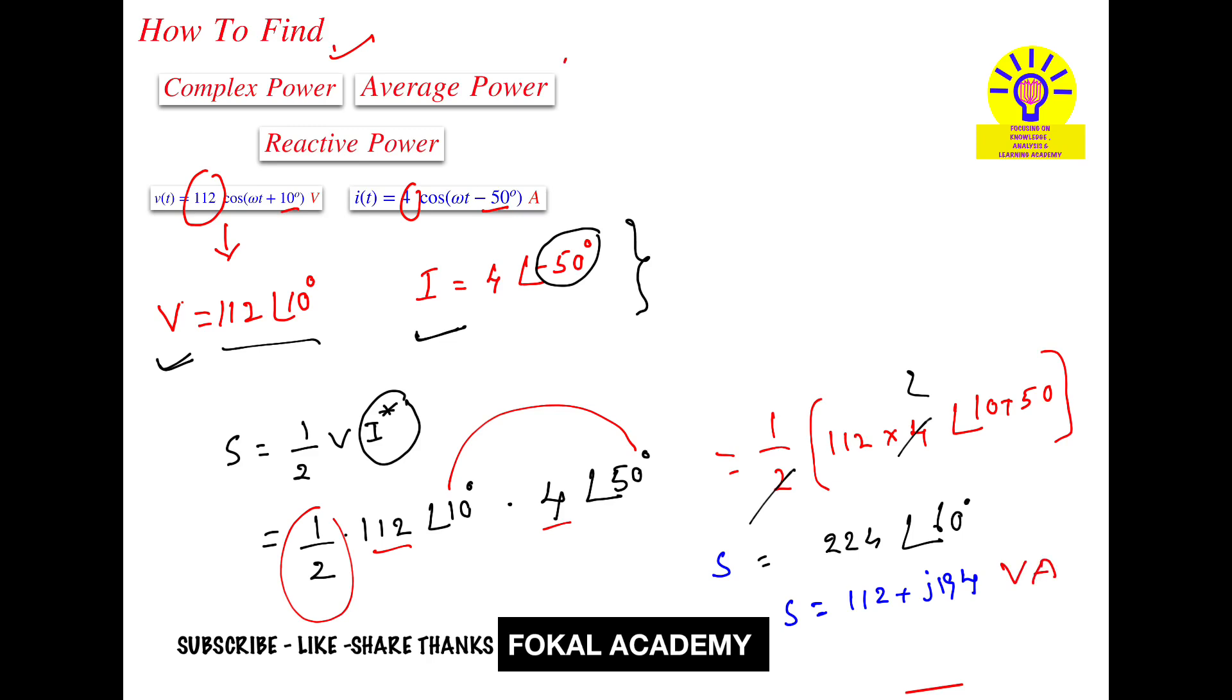These are the units for complex power. Now how can you find average power and reactive power? This can be easily found from the complex power. The real part is called average power and the imaginary part is called reactive power. For average power the units are watts, and for reactive power the units are vars.